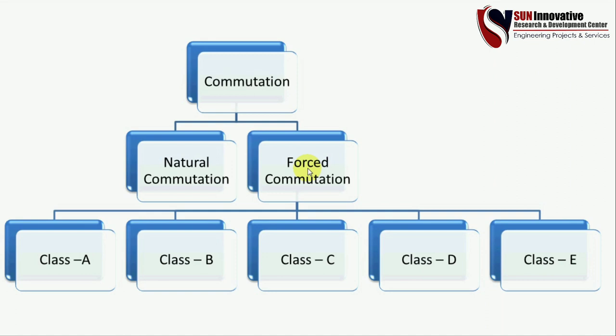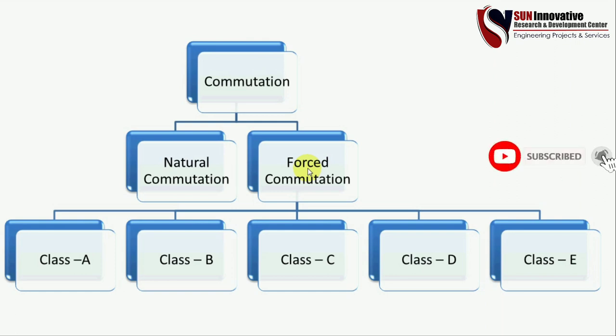First I will tell you what is commutation. It is a method to make the SCR or thyristor turn off. When AC supply is given to the thyristor, it naturally gets commutated — no additional component is required to turn the thyristor off, because the AC sinusoidal waveform crosses zero multiple times in one cycle.